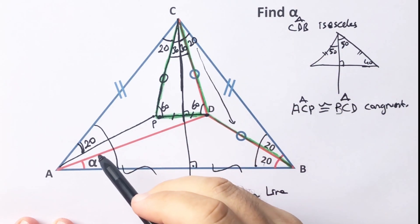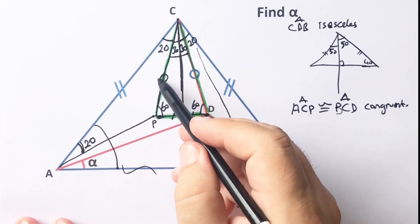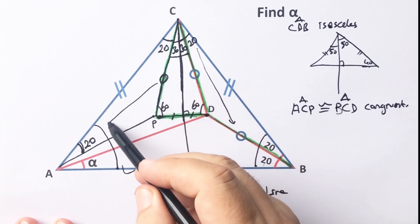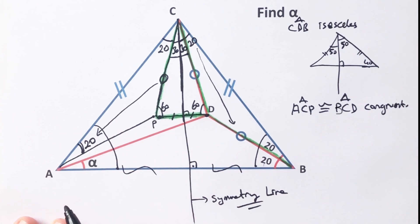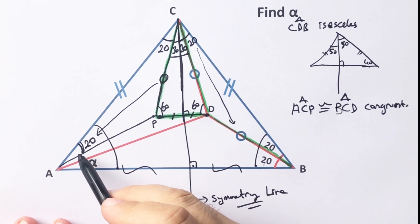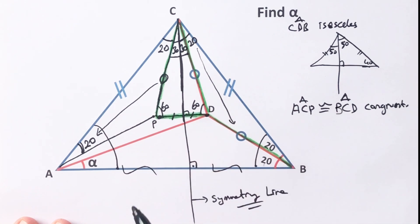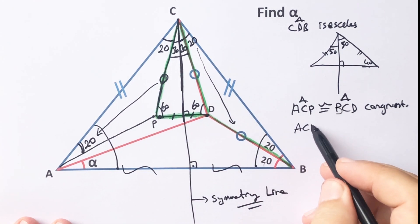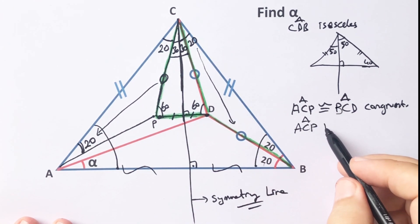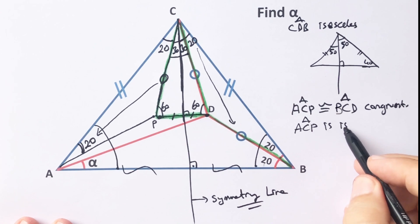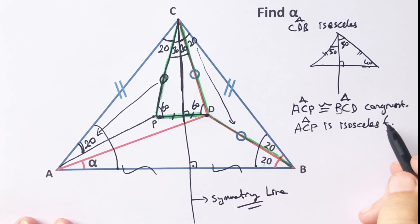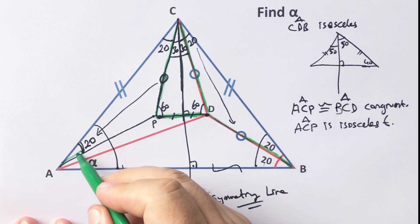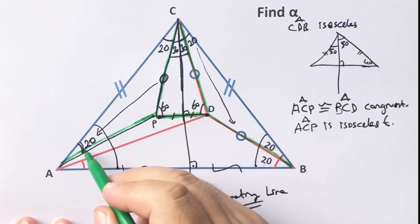If it is 20 degrees, this angle must be 20 degrees — because it is opposite the same length. Triangle ACP is an isosceles triangle, meaning this side must be equal to the others.